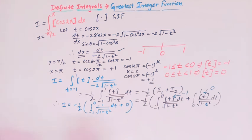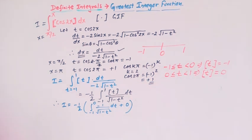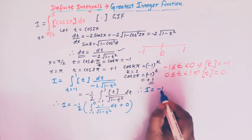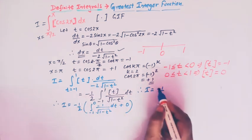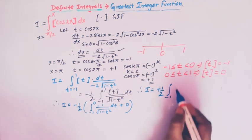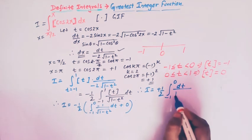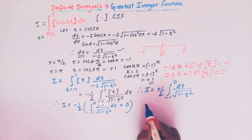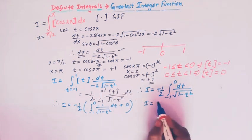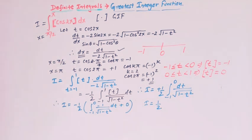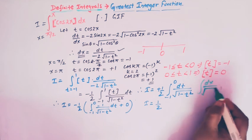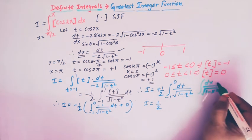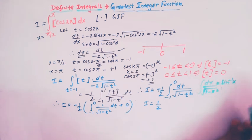The second integral disappears and we are left with only I₁. Therefore I = −(1/2) × (−1) ∫₋₁⁰ dt/√(1 − t²), and the two negatives multiply to give a positive. We use the standard result that ∫ dx/√(1 − x²) = sin⁻¹x.